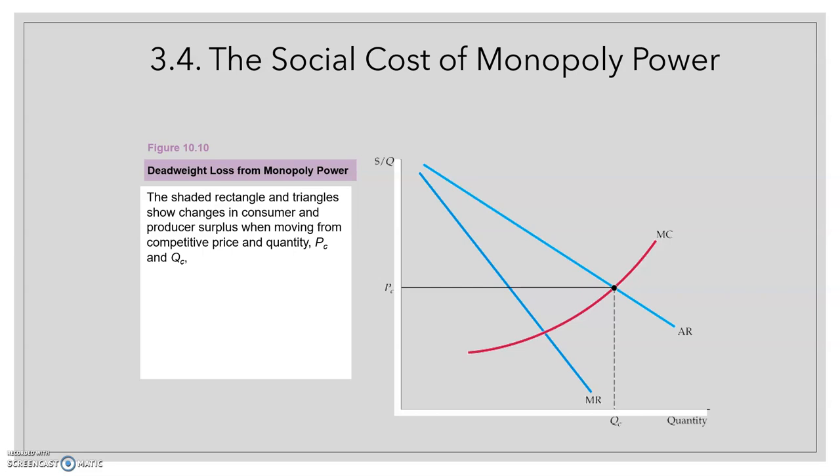But is society as a whole in a better situation, or is it in a worse situation? As economists, we are interested to know what happens with the society, if they are better or worse. We can answer this question by comparing the consumers and producers surplus that results when a competitive industry produces a good with the surplus that results when a monopolist supplies the entire market.